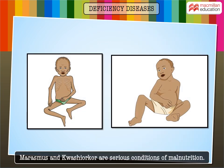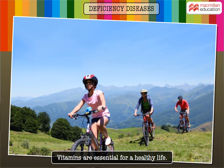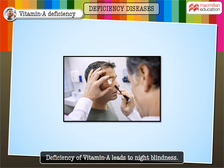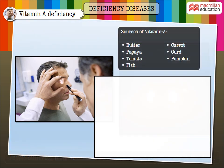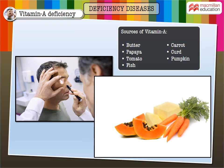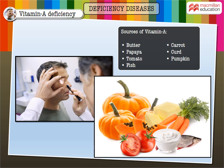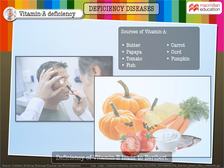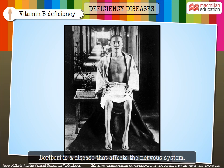Both marasmus and kwashiorkor are serious conditions of malnutrition. Vitamins are essential for a healthy life. Deficiency of vitamin A leads to night blindness — people suffering from this deficiency cannot see properly in the dark. Butter, carrot, papaya, curd, tomato, pumpkin, and fish are good sources of vitamin A.